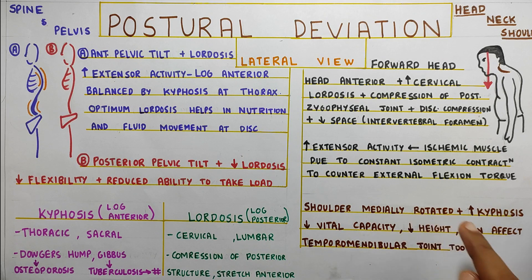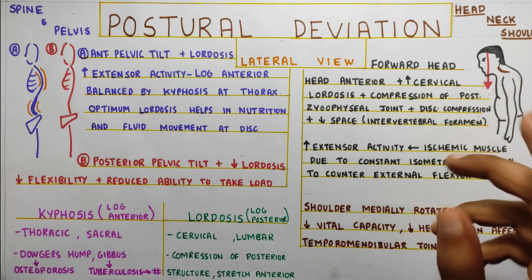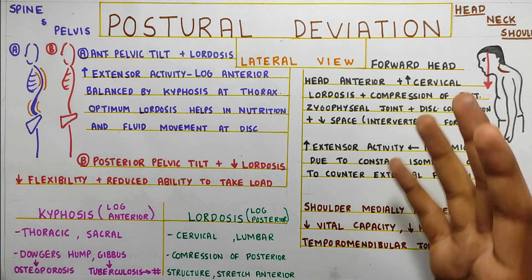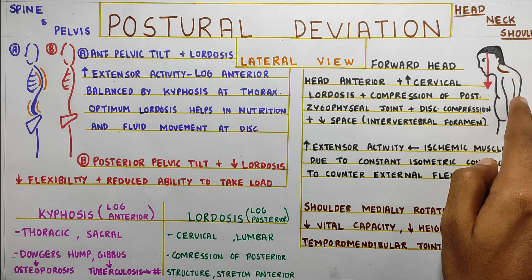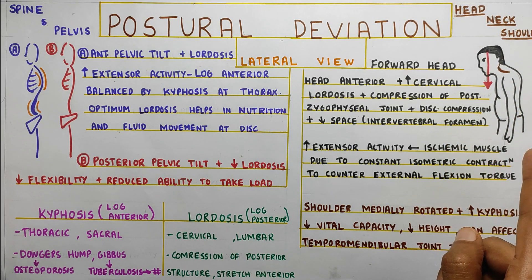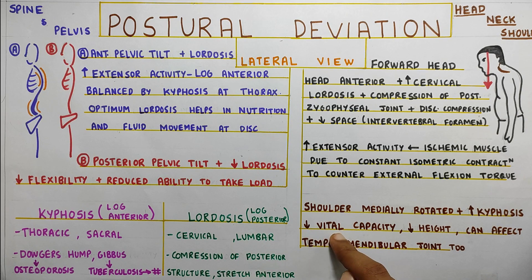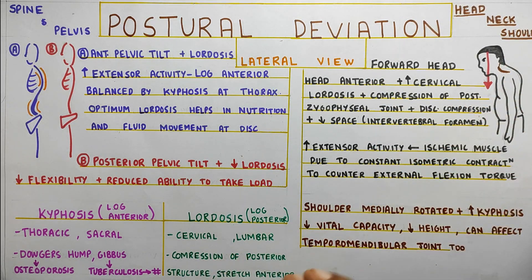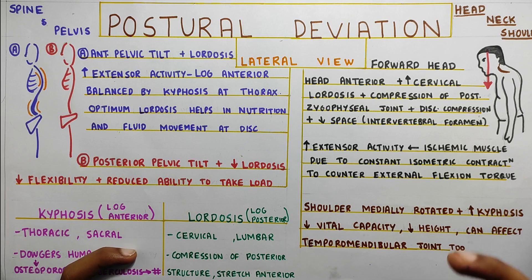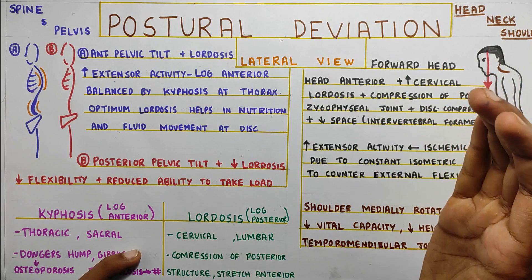Apart from this, the shoulder can also be medially rotated, which you can't really see in this lateral view — I will cover that in the anterior and posterior view. There will also be increased kyphosis, and with kyphosis there will be reduced vital capacity. You can try this yourself — just go into kyphosis and try to breathe deeply in the thoracic region. You can't breathe as much as when you keep your spine straight. So the vital capacity will be reduced, and the height of the person will also be reduced because they are bending forward.